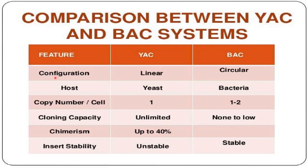Now, the comparison between YAC and BAC systems: the configuration is linear in the case of YAC, whereas it is circular in BAC. The host for Yeast Artificial Chromosome is yeast, whereas for Bacterial Artificial Chromosome it is bacteria. The copy number is 1 in the case of BAC, 1 to 2.